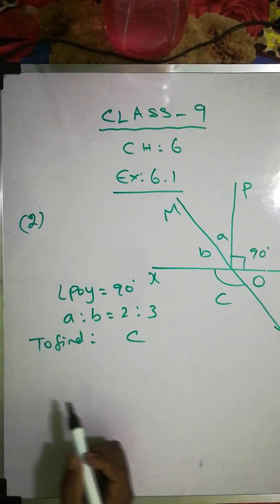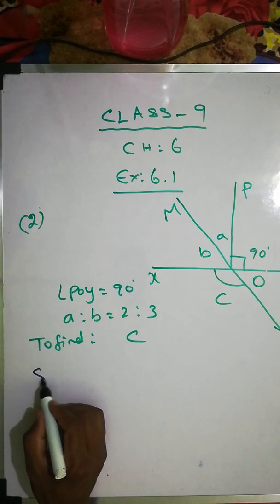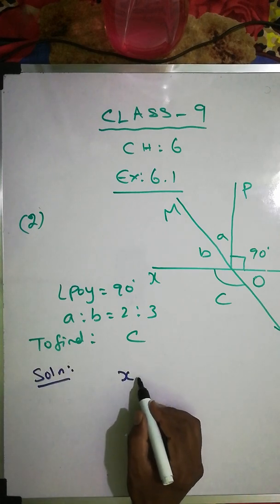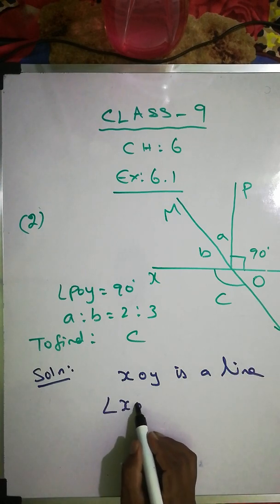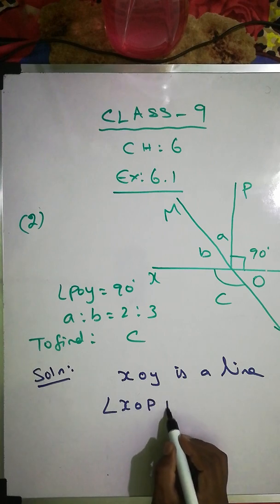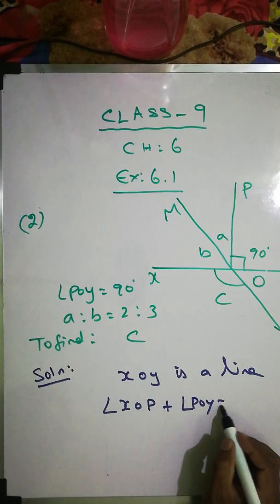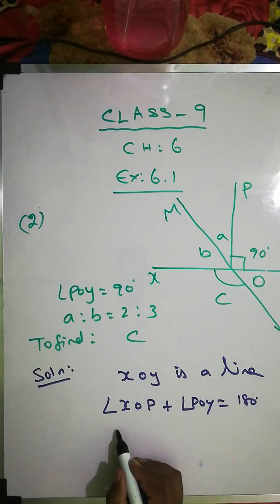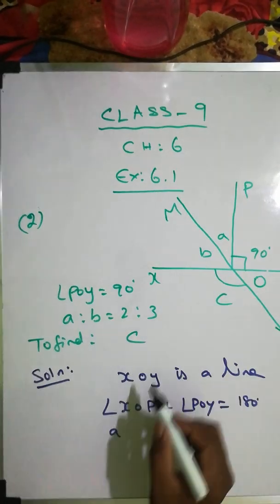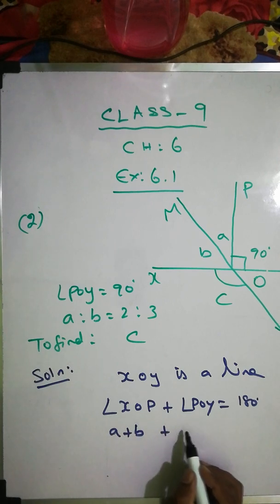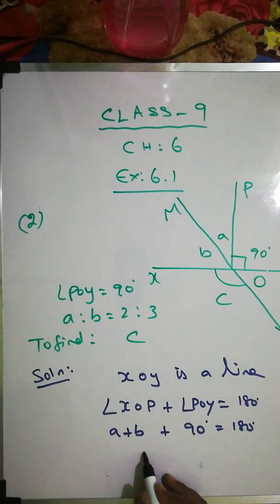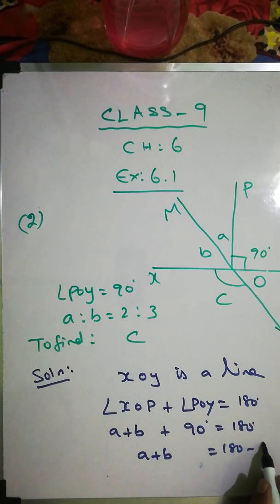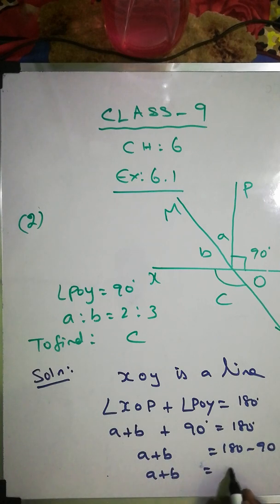Solution: XOY is a line, so angle XOP plus angle POY equals 180 degrees. Angle XOP means angle A plus angle B, and angle POY is 90 degrees. So A plus B plus 90 equals 180, therefore A plus B equals 90 degrees.